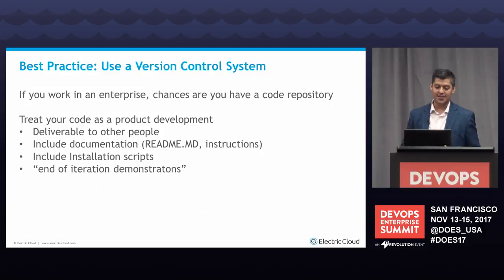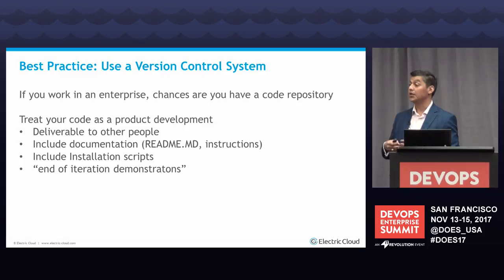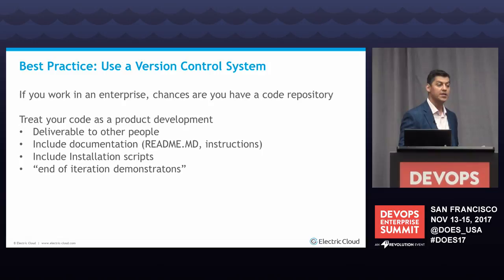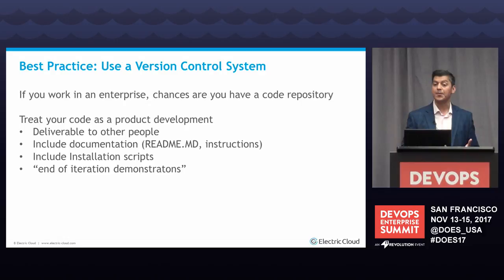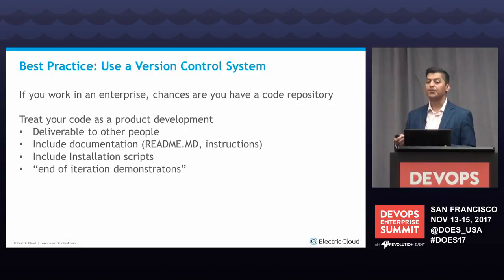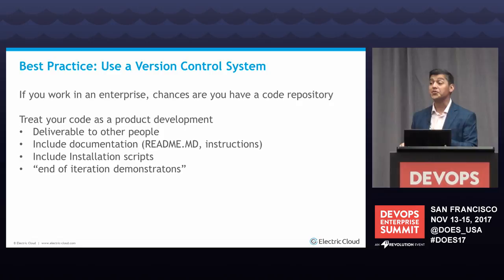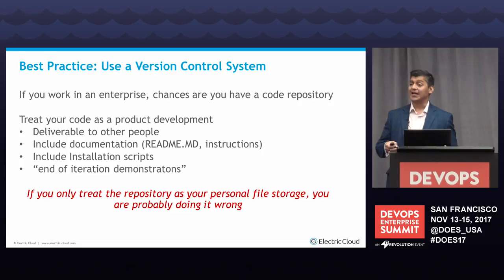Best practice number one: use a version control system. A lot of systems have UI-based inline scripting. I would recommend using something external — I use Git. This helps you deliver your code as a product, as a deliverable to other people, with your online documentation and readme. I've seen too many projects that don't have a readme — that's quite frustrating. If you have installation scripts, include those as well. I've also seen people embrace process as code with sprint-based deliverables, where at the end of two weeks they demonstrate how they automated their processes since last time — and that goes over really well. If you only treat your repository as file storage with no readme, you're probably not doing it right.